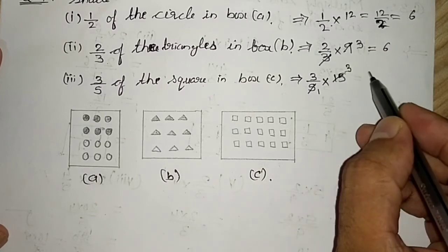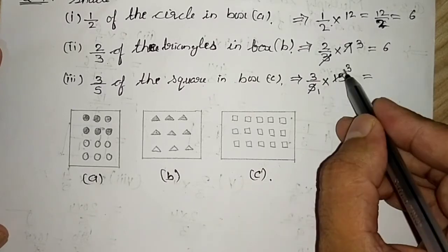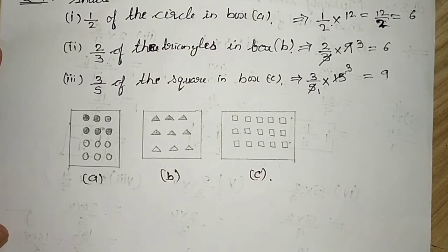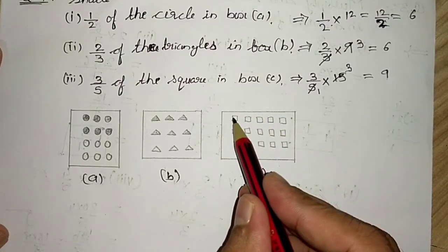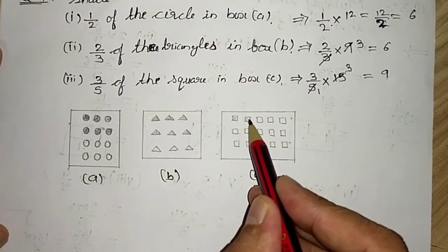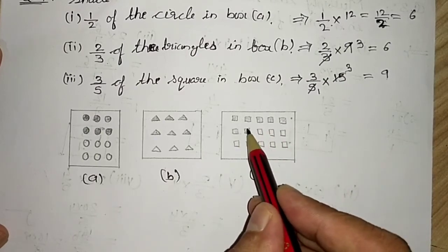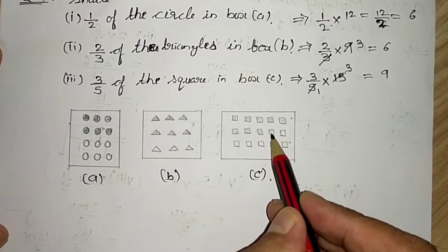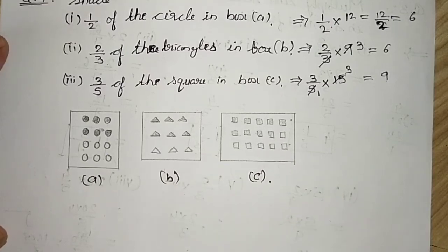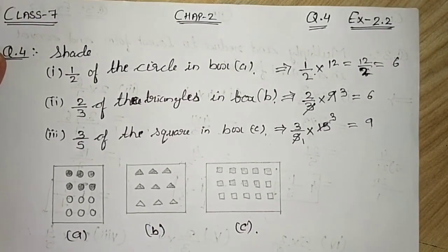And I will multiply 3 into 3 will be 9. So I have to shade nine squares: 1, 2, 3, 4, 5, 6, 7, 8, and 9. That you have to shade. It was very easy, right students?